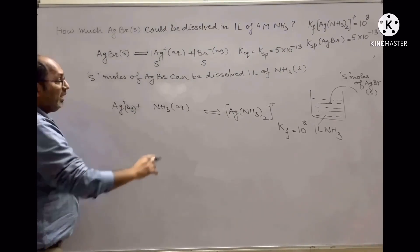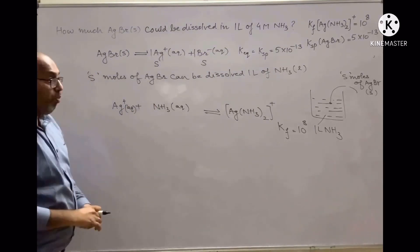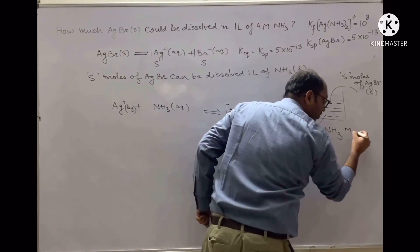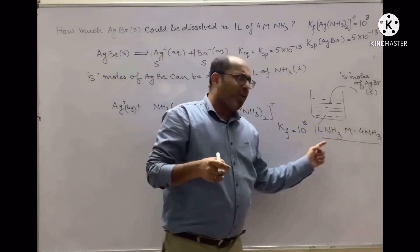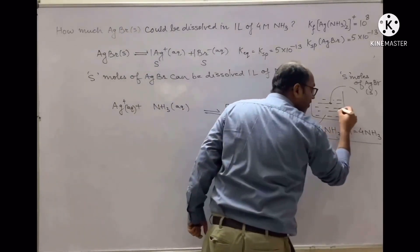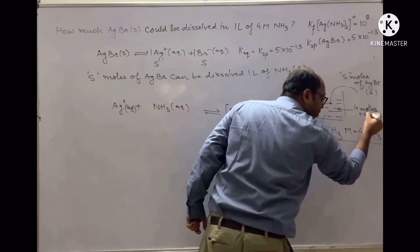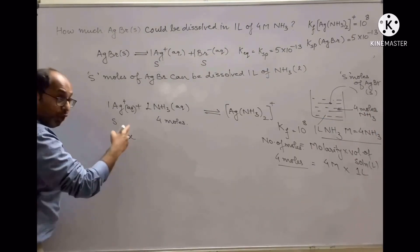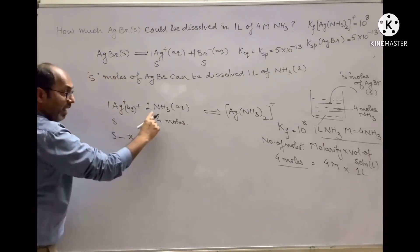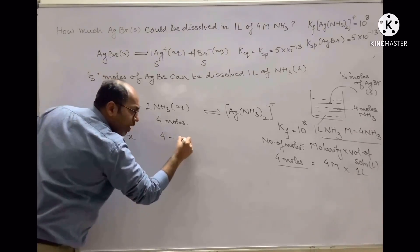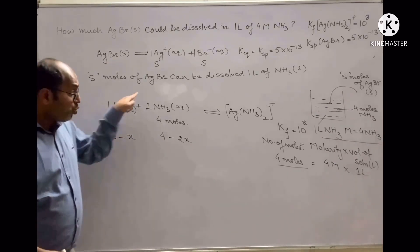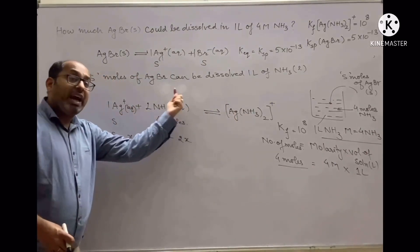Now, Ag⁺ is reacting with ammonia. In one liter of 4 molar ammonia solution, molarity × volume in liters gives number of moles, so you have 4 moles of ammonia. If x moles of Ag⁺ are used to form the complex, since they react in a 1:2 ratio, 2x moles of ammonia will combine. So if x moles of Ag⁺ enter solution as complex, 2x moles of ammonia are utilized.